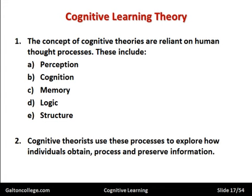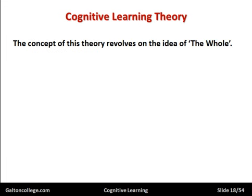Cognitive theorists use these processes to explain how individuals obtain, process, and preserve information. We have different ways of acquiring and processing information. The concept of this theory revolves around the idea of the whole — the whole business, the whole structure — and then we go looking for the individual components and the logic of how the different parts fit together, and how the product is processed or the outcome developed.